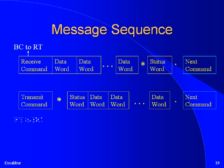A transmit command, also called an RT to BC command, begins with a command word. The RT named in the command word has up to 8 microseconds to respond with a status word followed by the requested data. Following each complete message, the bus controller waits at least two microseconds before sending the next message.